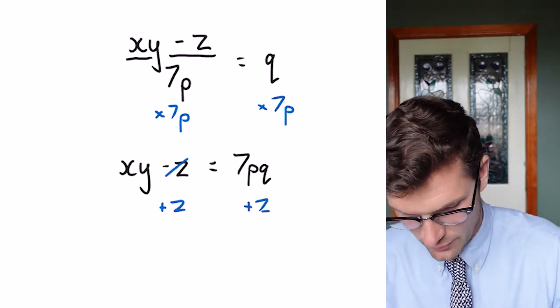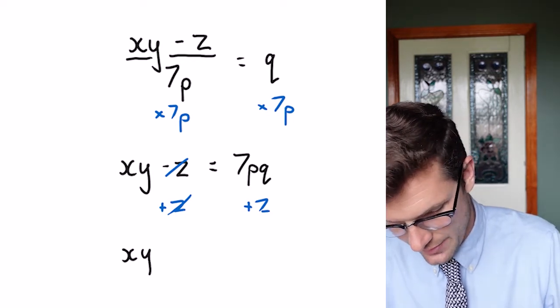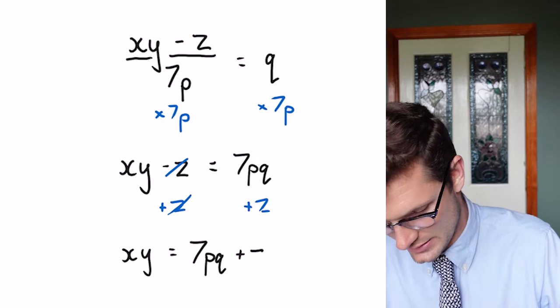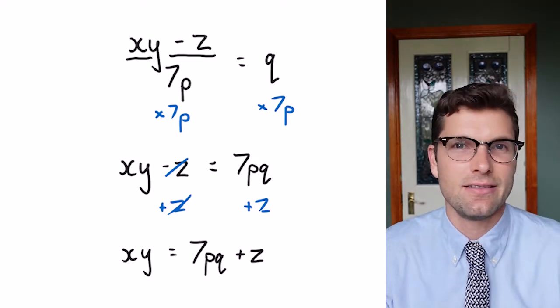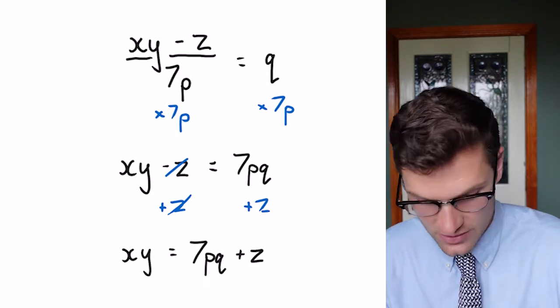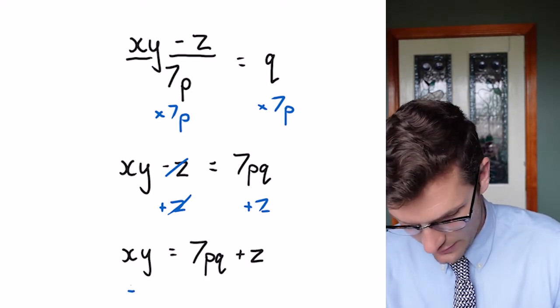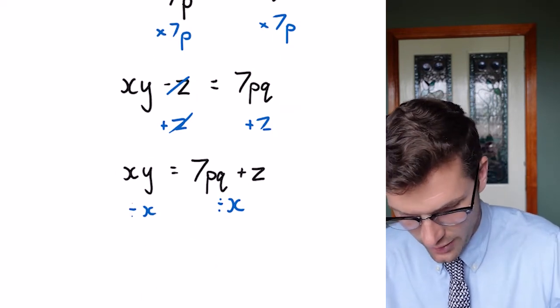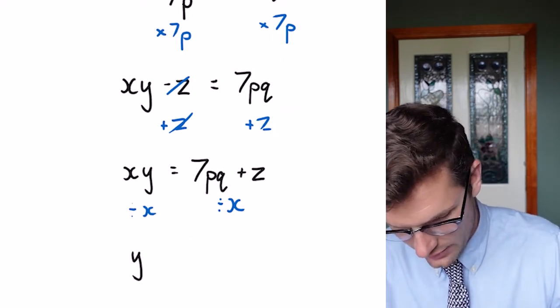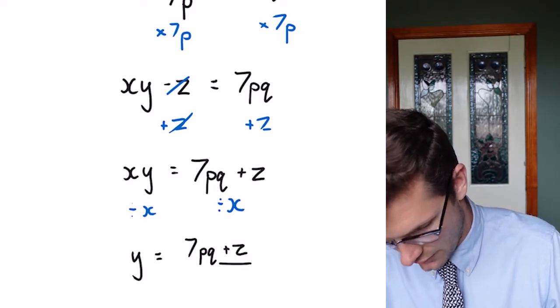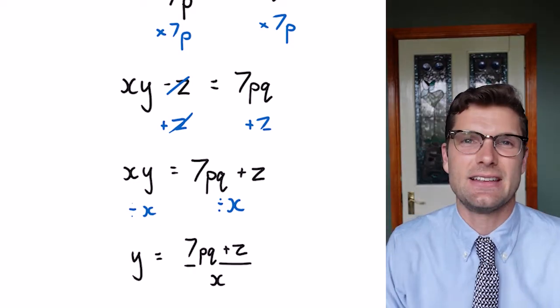That's going to get rid of these two, leaving us with xy is equal to 7pq plus z. Then we've got x times y. To get rid of x times, we have to divide this side by x, divide everything on this side by x, and we're finally left with y is equal to all that stuff divided by x. And that's our final answer.